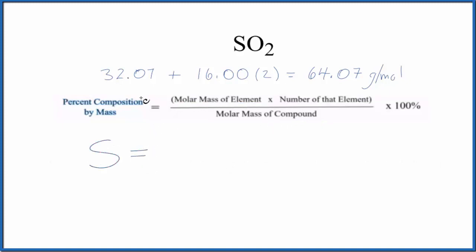Sulfur on the periodic table is 32.07 grams per mole. We have our molar mass of the element, we only have one sulfur so we could multiply by one, but that won't do anything so we'll leave that there. Then we divide by the molar mass of the compound which we just found.